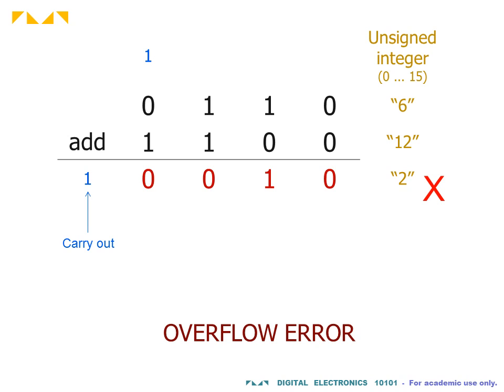In general, for the unsigned integer representation, the generation of a carry out acts as a flag for an overflow error.